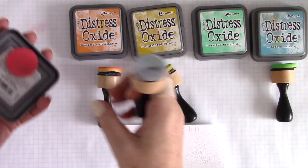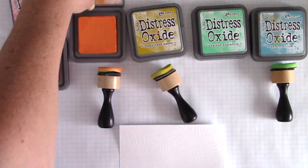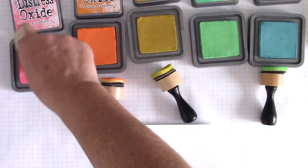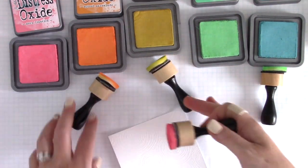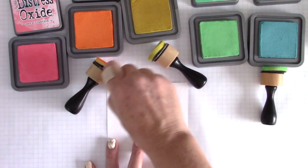Now of course you can't see it yet because it is white on white, but I am going to use the Distress Oxide inks. I have a couple of ink blending tools and I keep the little foams on the bottom of the inks attached by some self-stick velcro.